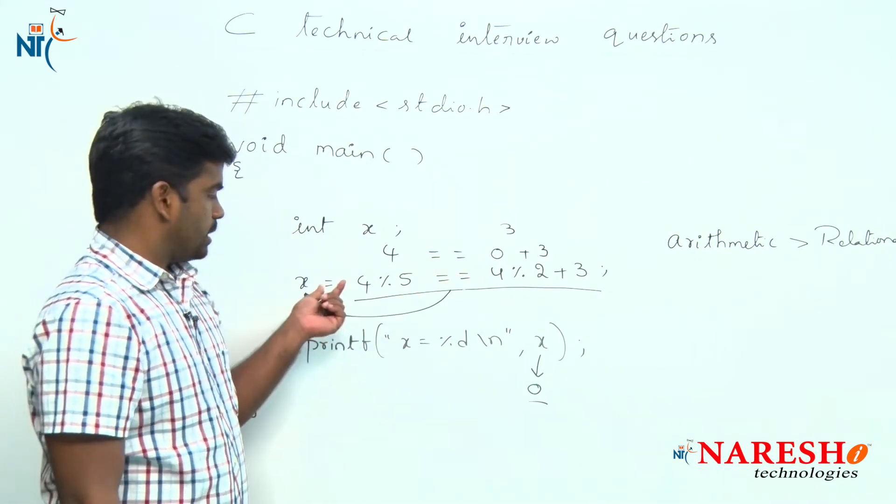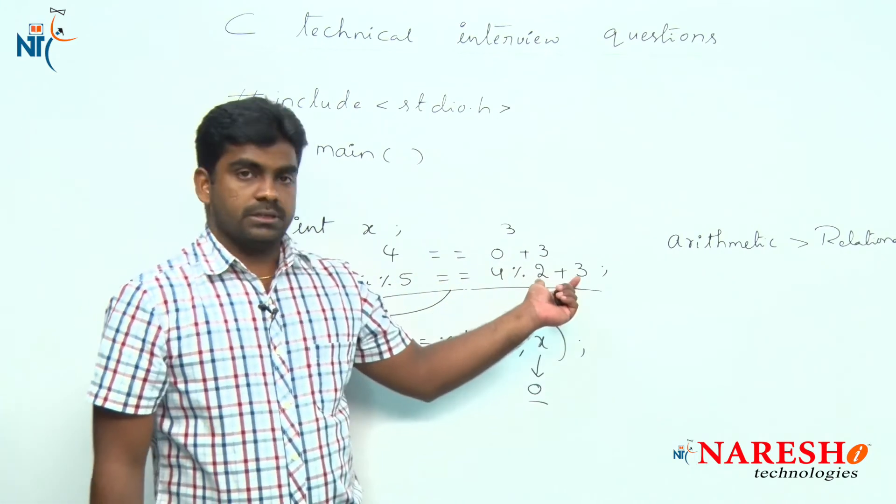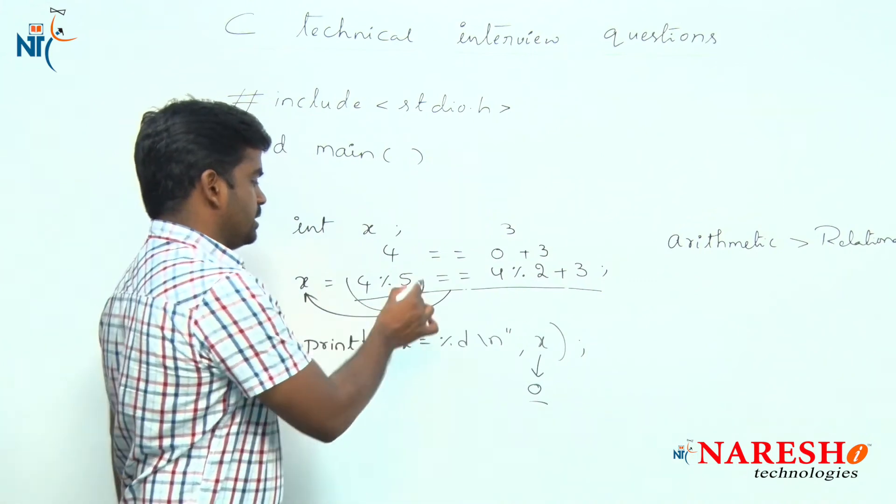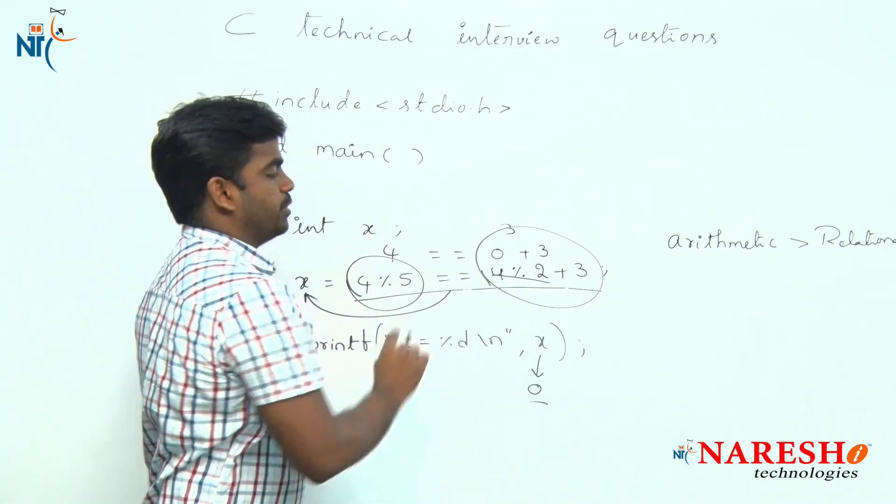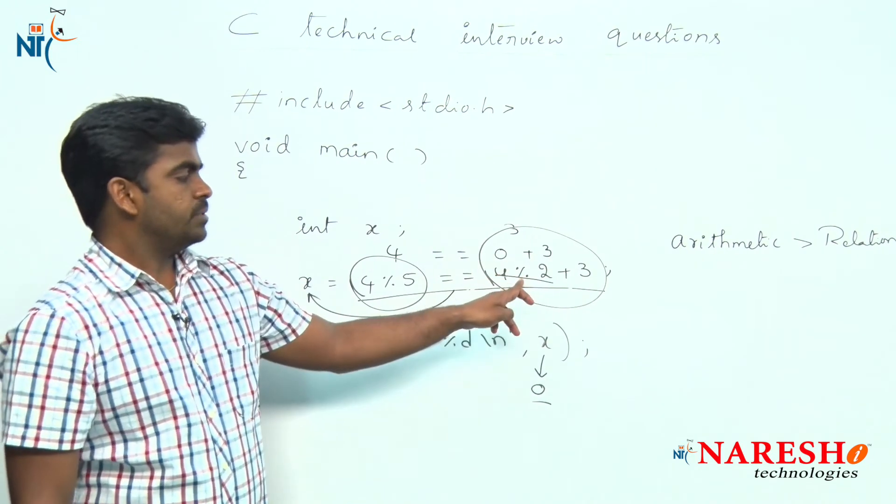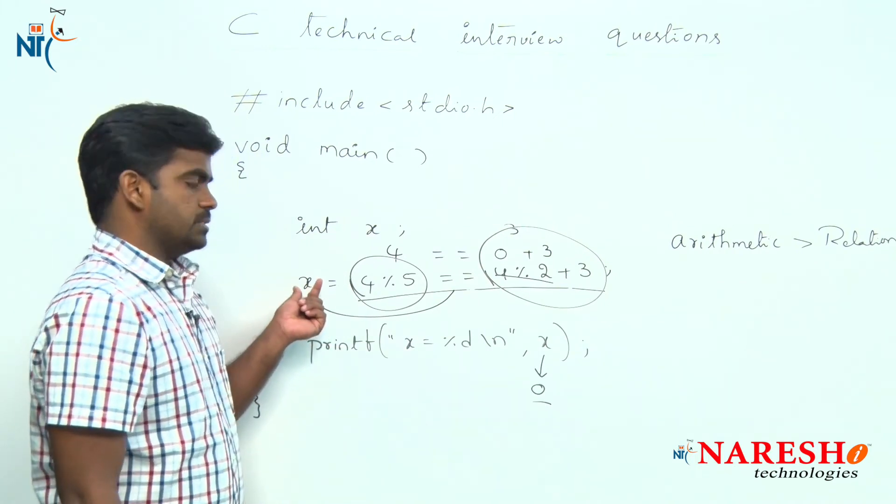First here is one assignment operator, relational operators, and some arithmetic operators. First arithmetic operators execute, and in arithmetic operators the highest priority will execute. Next it will check the relation, and finally the result will be assigned to x.